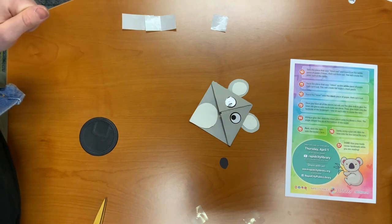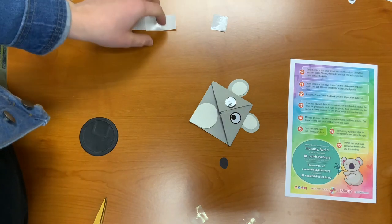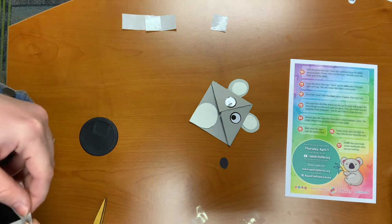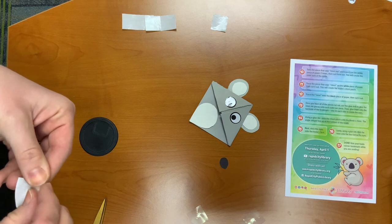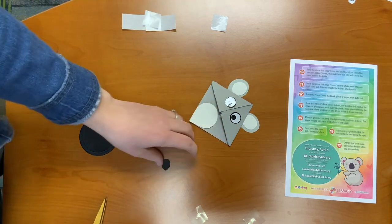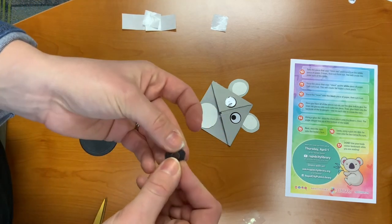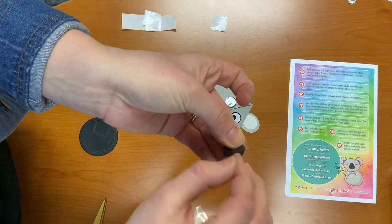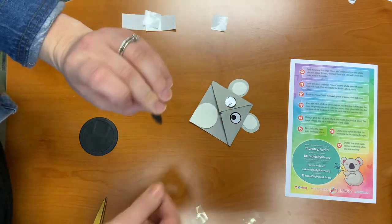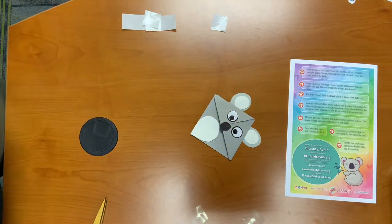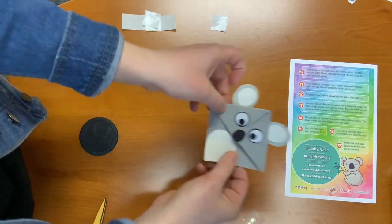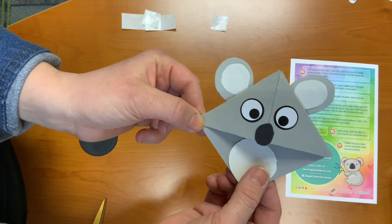Step sixteen. Using a glue dot, place the nose below the eyes. Last glue dot. I'm going to take that glue dot here and stick it onto the koala's nose. And there you have it.